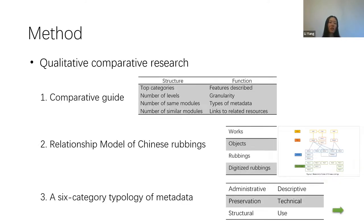This study presents an overview and comparative analysis of metadata schemes from different rubbings collections. The purposes are: to increase awareness of different metadata schemes used to catalog rubbings; to enhance understanding of how different cultural backgrounds influence rubbings description; to enrich existing comparative research; to contribute toward common rules for describing rubbings resources; and to identify important factors for rubbings data modeling. A comparative guide was designed to examine structural and functional features of the schemes.